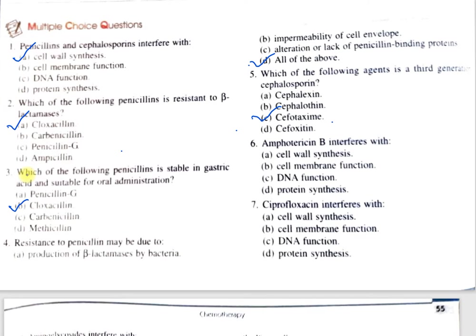Question number 6: Amphotericin B interferes with — A, cell wall synthesis; B, cell membrane function; C, DNA function; D, protein synthesis. The correct option is B, cell membrane function. Amphotericin B is an antifungal that inhibits the fungal cell by binding with the sterols present in the cell membrane. As a result, the fungal cell membrane is not constituted properly and the contents of the cell get leaked, causing cell disruption.